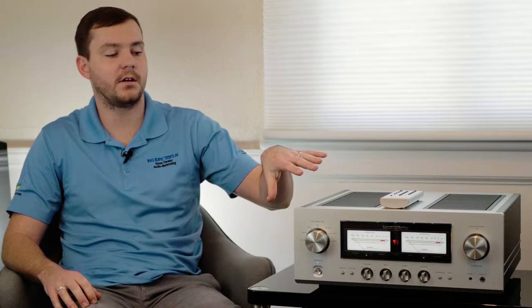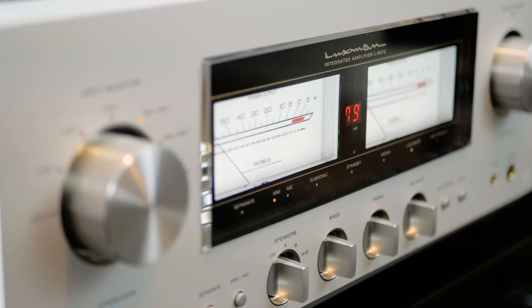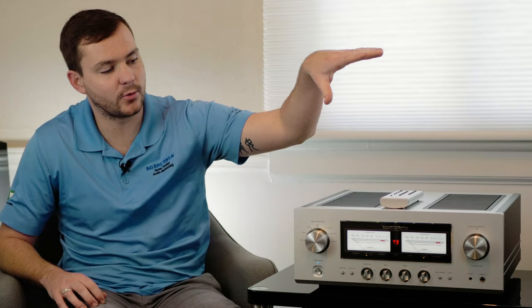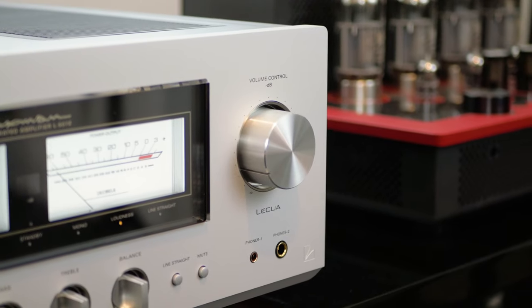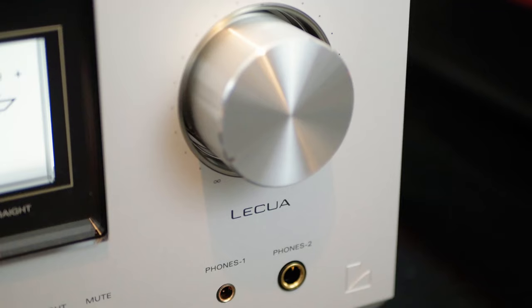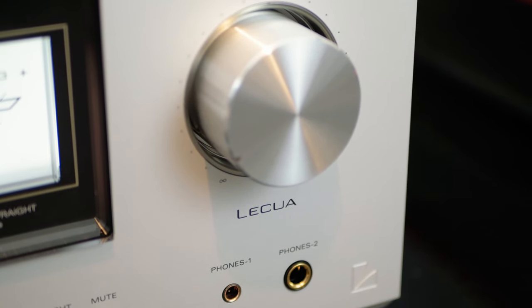Over on the left of the VU meters is the input selector and on the right we have the volume adjustment. The volume adjustment features Luxman's electrically controlled ultimate attenuator.